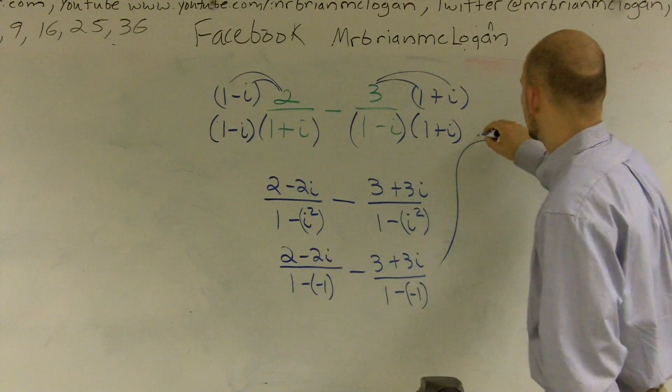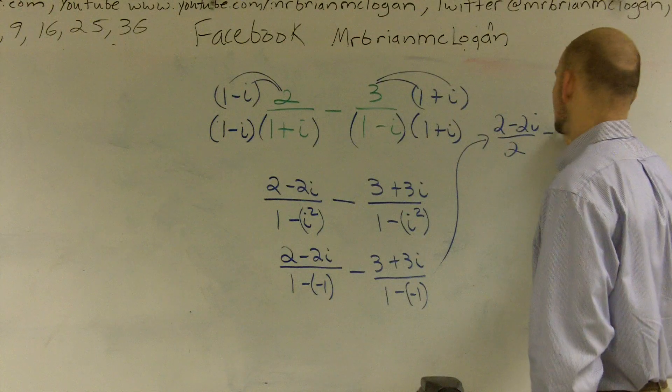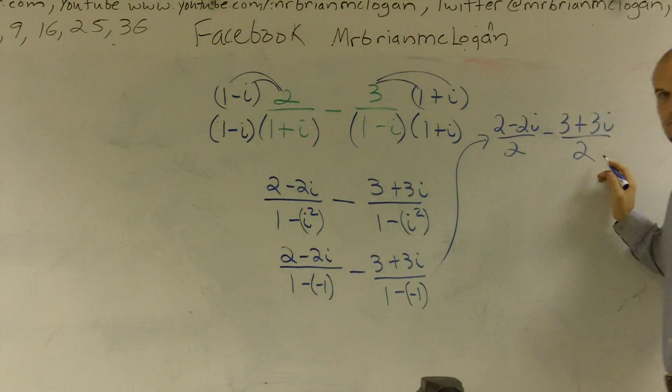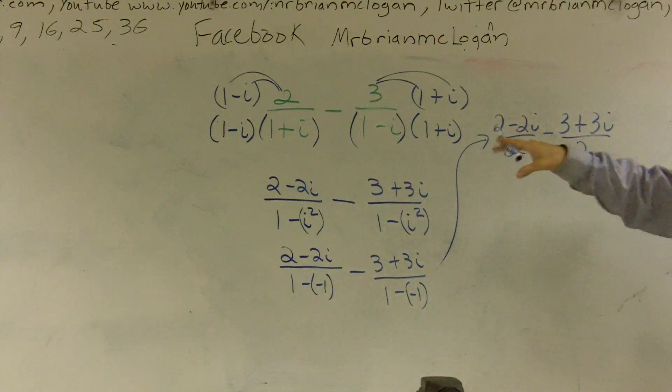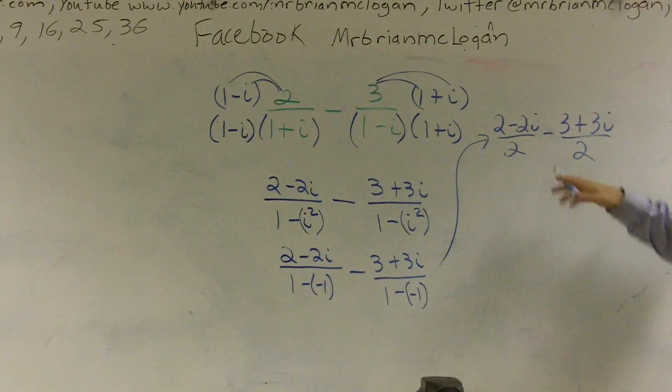Just tell me if I can get off the thing. So I can do 2 minus 2i over 2 minus 3 plus 3i over 2. Am I good? All right. See how they have the same denominator? Got it? Wide awake.